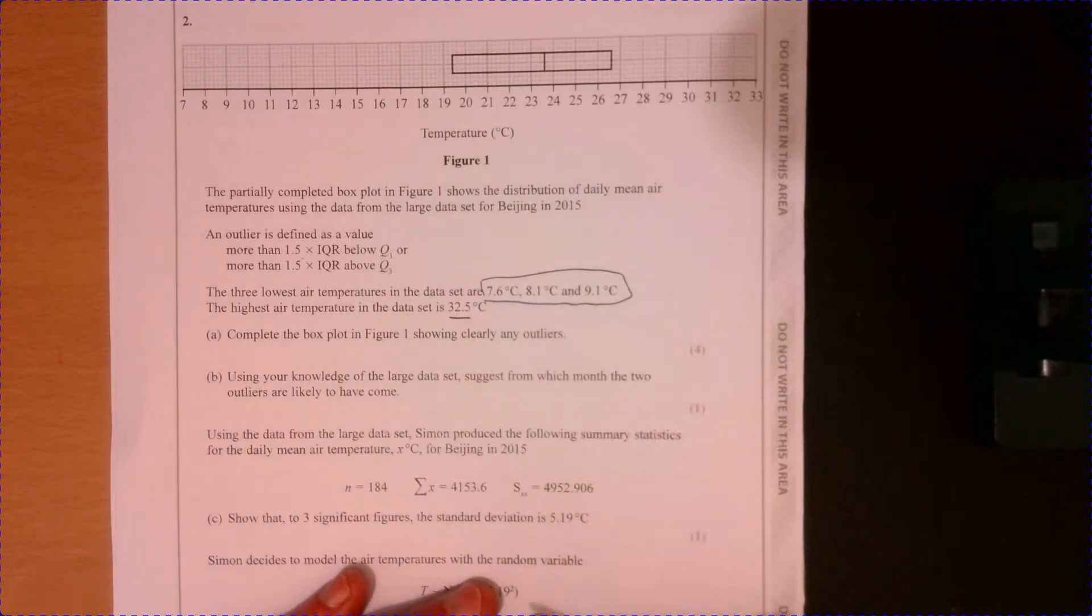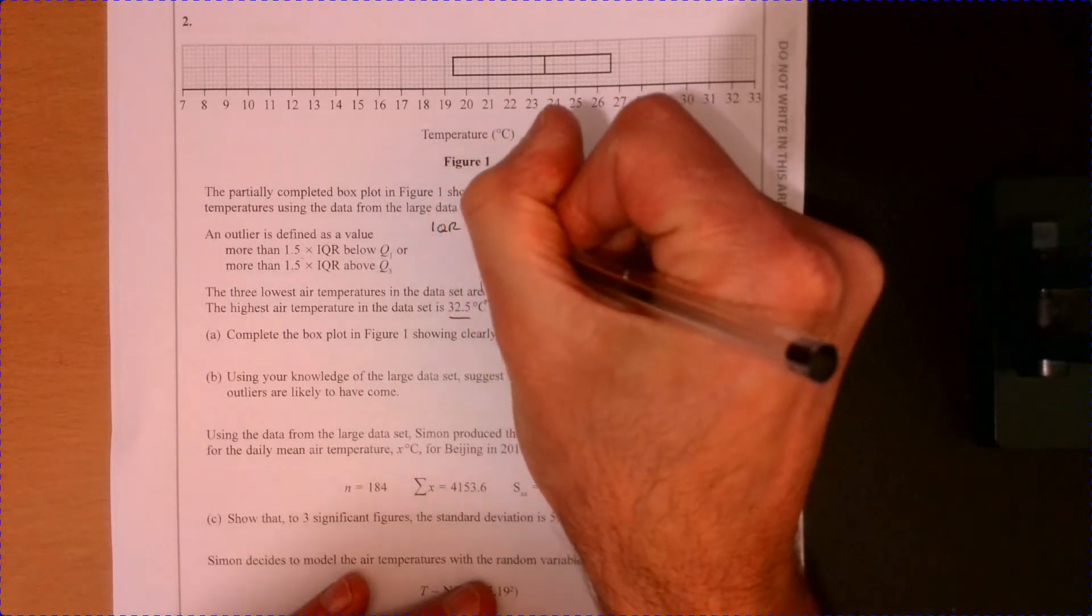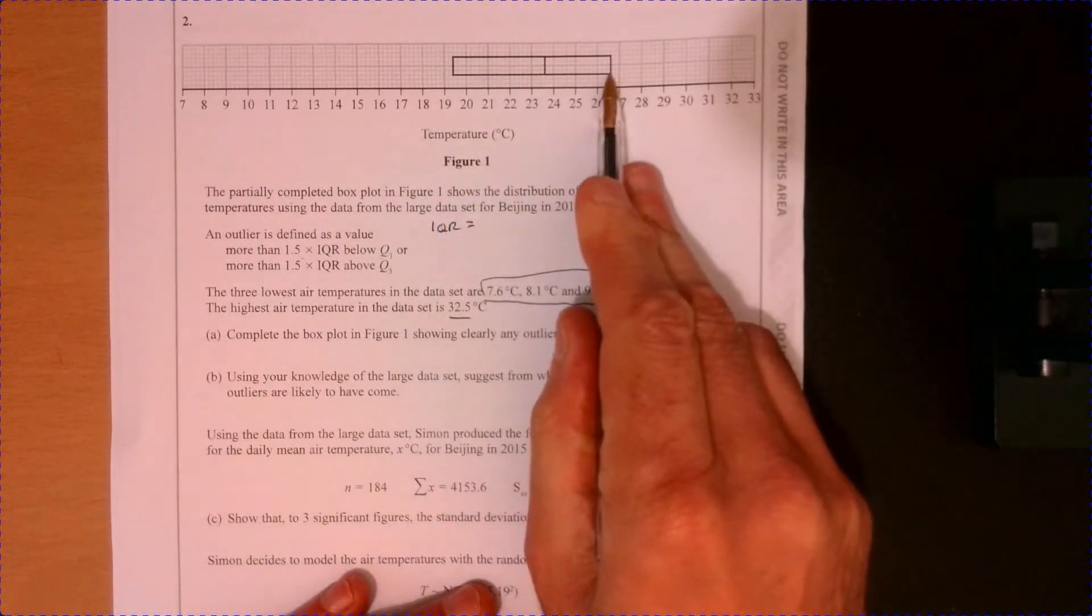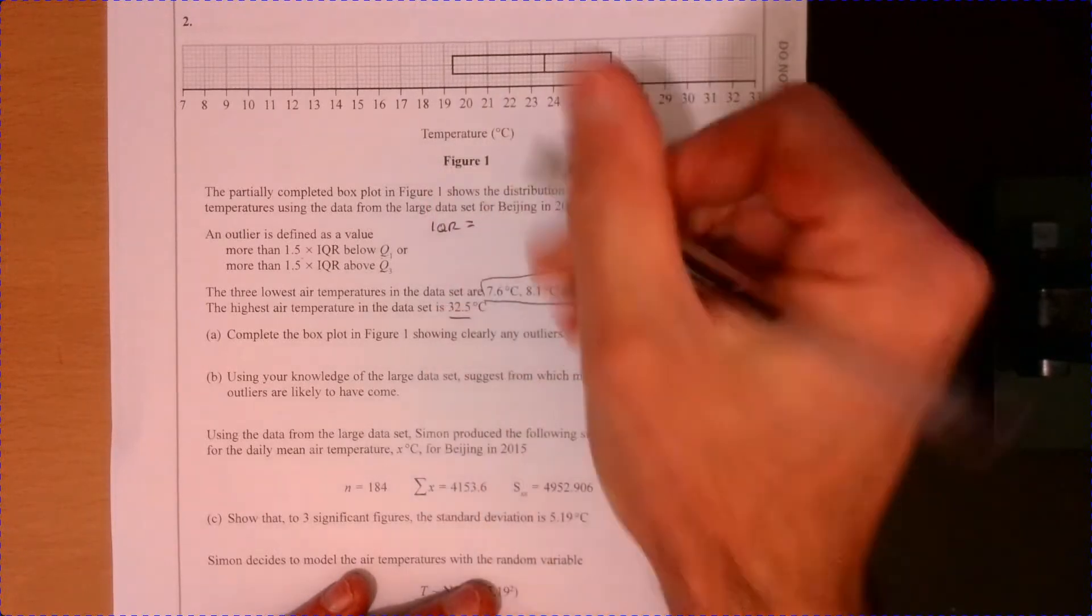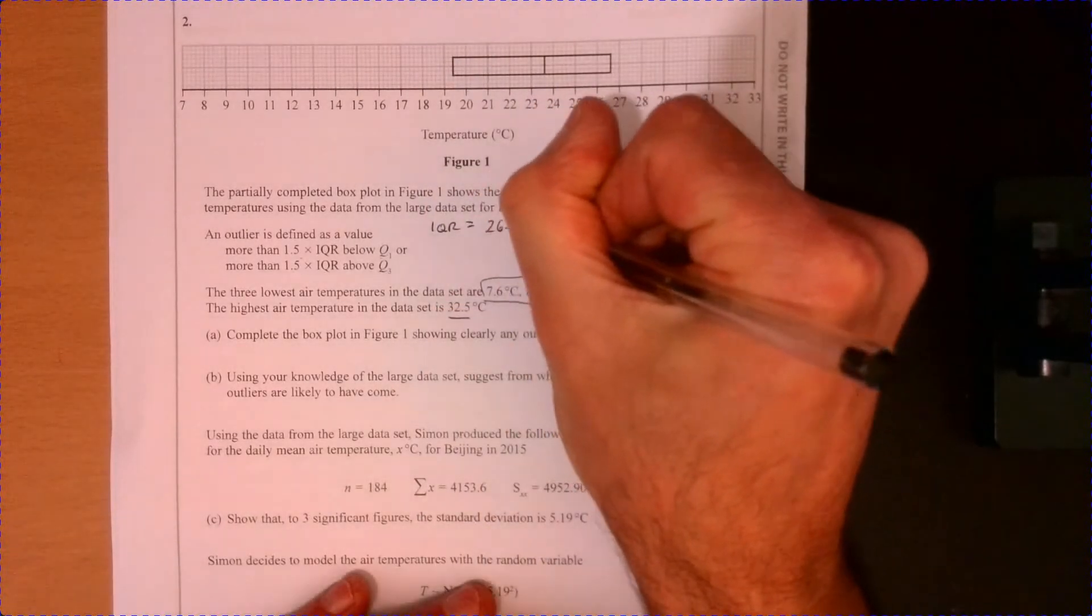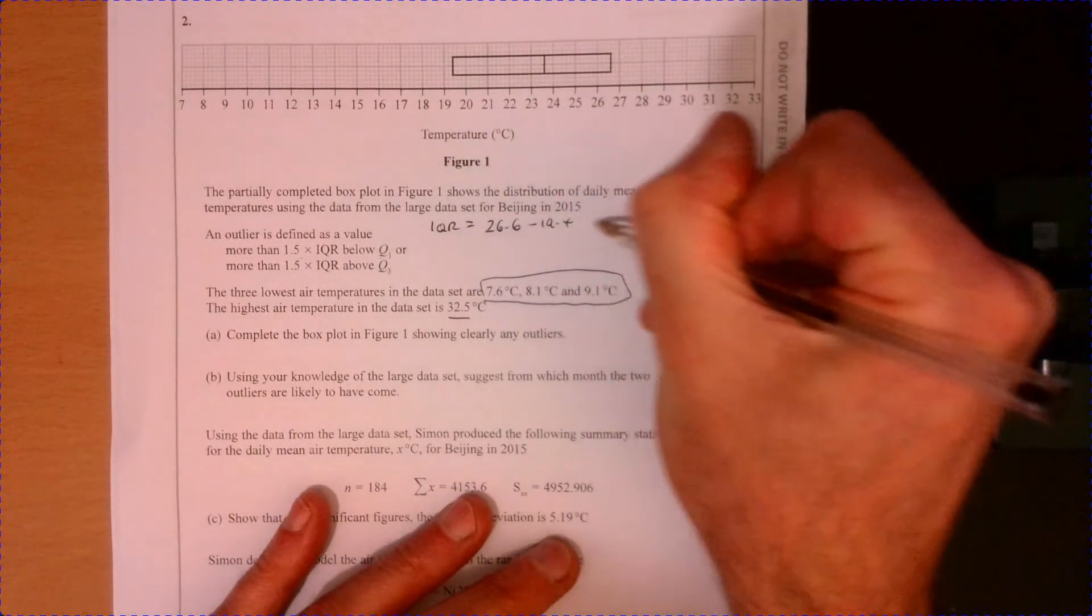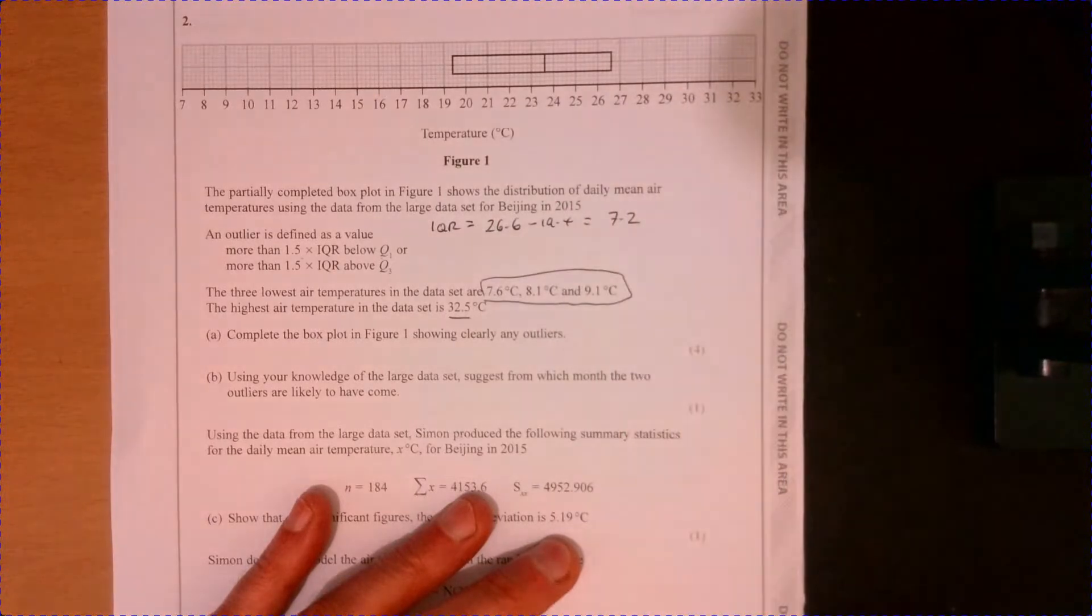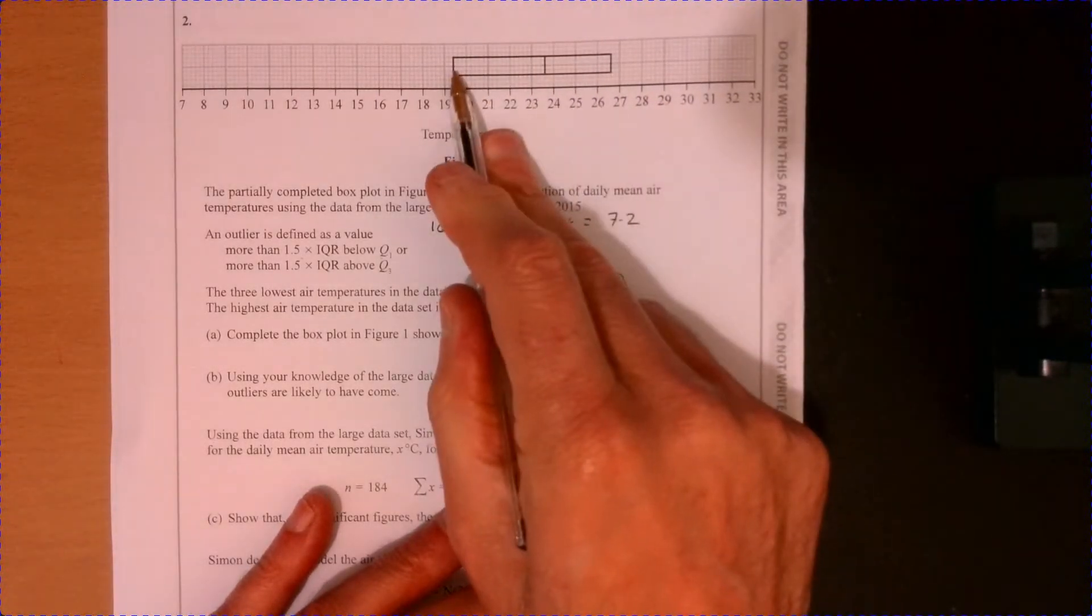So we're told this information over here. What we need to do is first of all work out what the interquartile range is. So the interquartile range is the upper quartile take away the lower quartile. So that's gonna be 26.6 take away 19.4 and that's equal to 7.2. So that's the interquartile range.